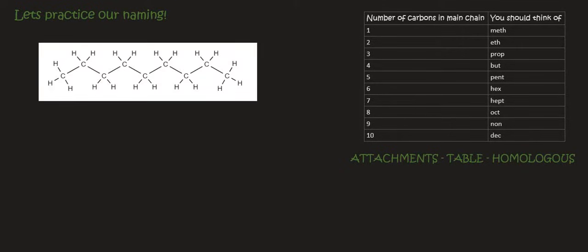Okay, so here's the first one. With this one, what we can see is that we've got 1, 2, 3, 4, 5, 6, 7, 8, 9 different carbons. So that's non from the table. And then this is simply an alkane. So that's just going to be nonane.